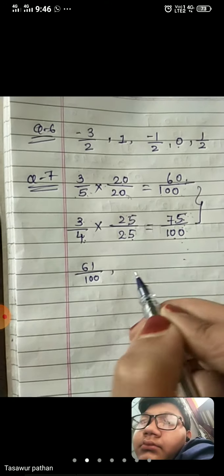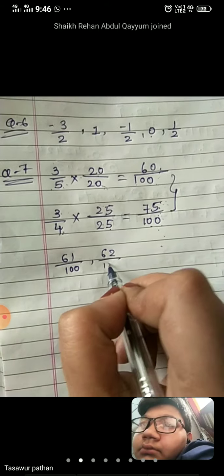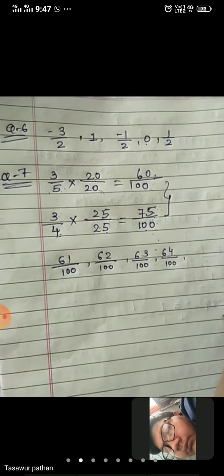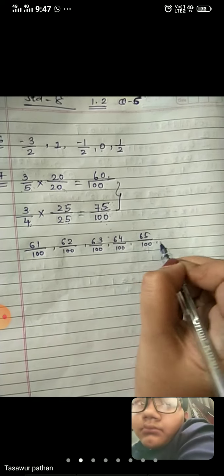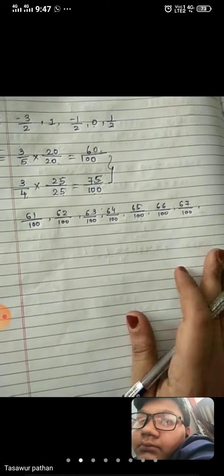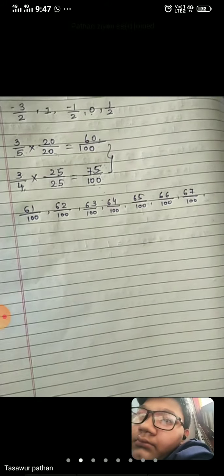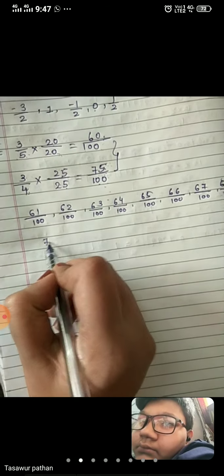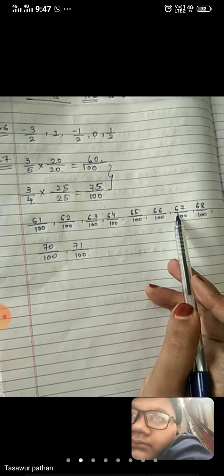We can take the numbers between them. So let's start: 61 upon 100, 62 upon 100, 63 upon 100, 64 upon 100 — that gives us 4 numbers. Then we go to 68 upon 100, 69 upon 100, 70 upon 100, and 71 upon 100. Count them: 1, 2, 3, 4, 5, 6, 7, 8, 9 and 10. We need 10 numbers, so we select from between 60 and 75 as needed.